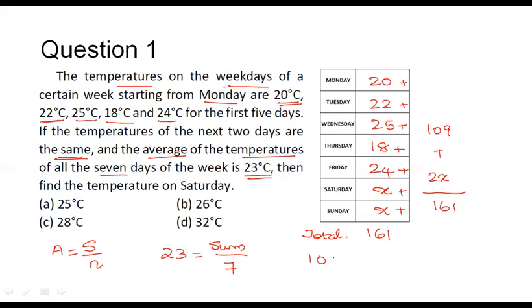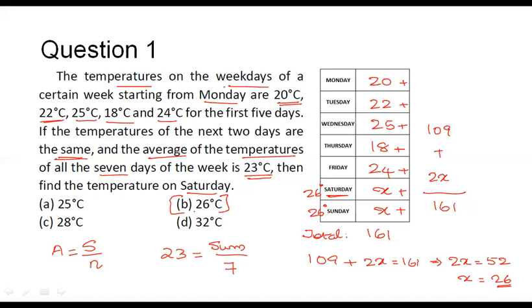From the equation 109 + 2x = 161, we get 2x = 161 − 109 = 52, so x = 52 / 2 = 26. Therefore, the temperature on Saturday is 26 degrees Celsius and on Sunday is also 26 degrees Celsius. The answer is 26 degrees Celsius — option B.